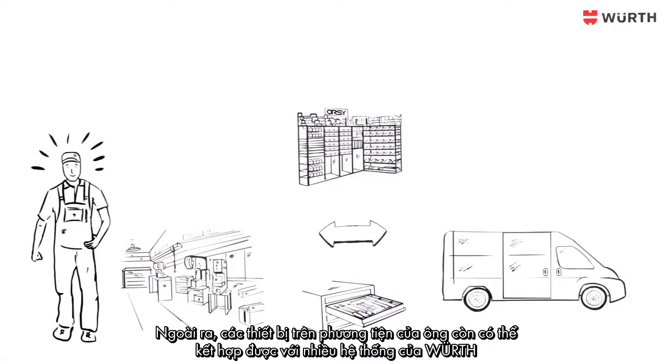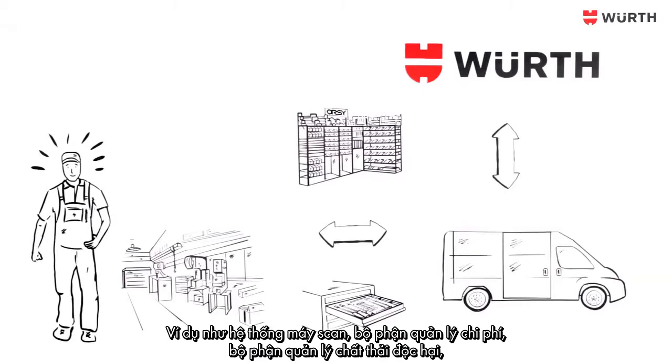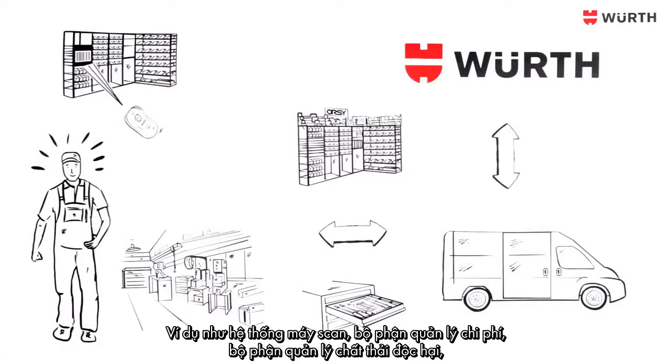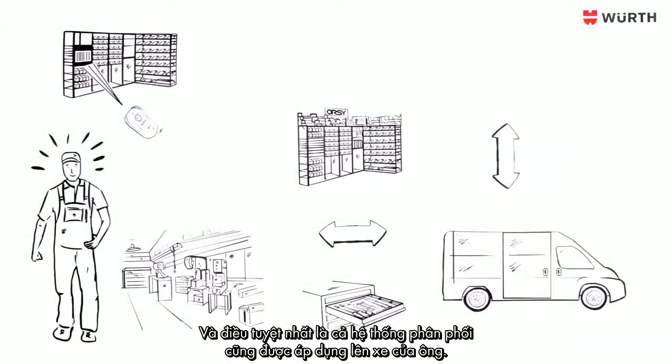Moreover, his vehicle equipment can be combined with other systems of Wörth, for example with the scanner system, the cost unit management, the easy hazardous material management and the machine system. And what is the best? The supply system from now on also works for his vehicle.